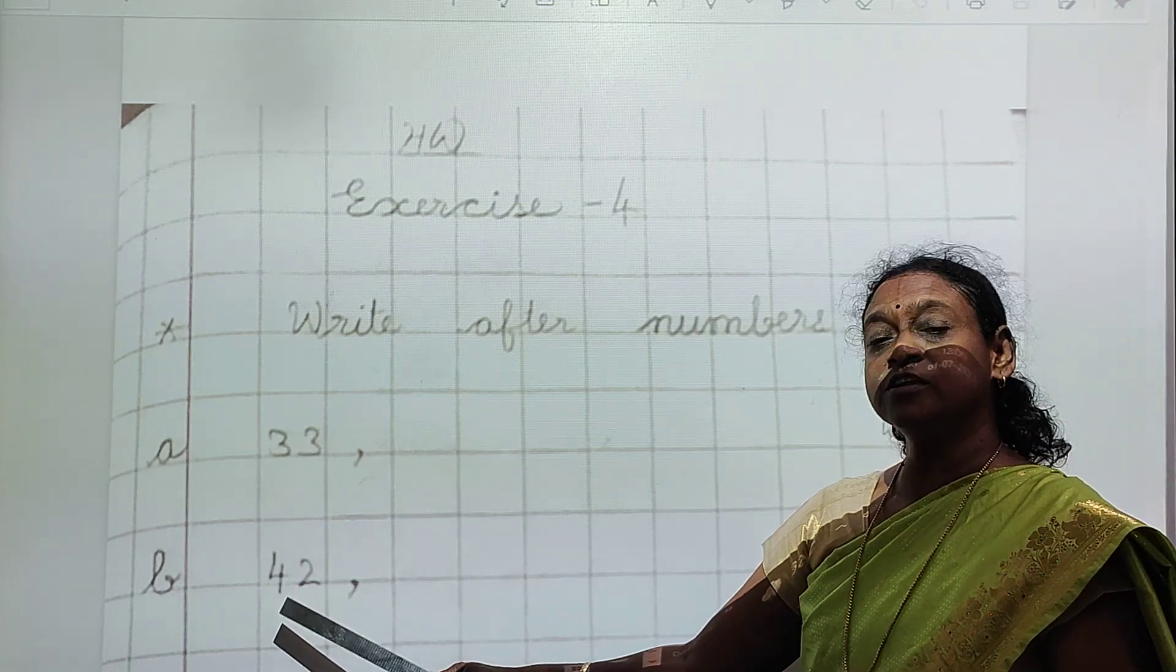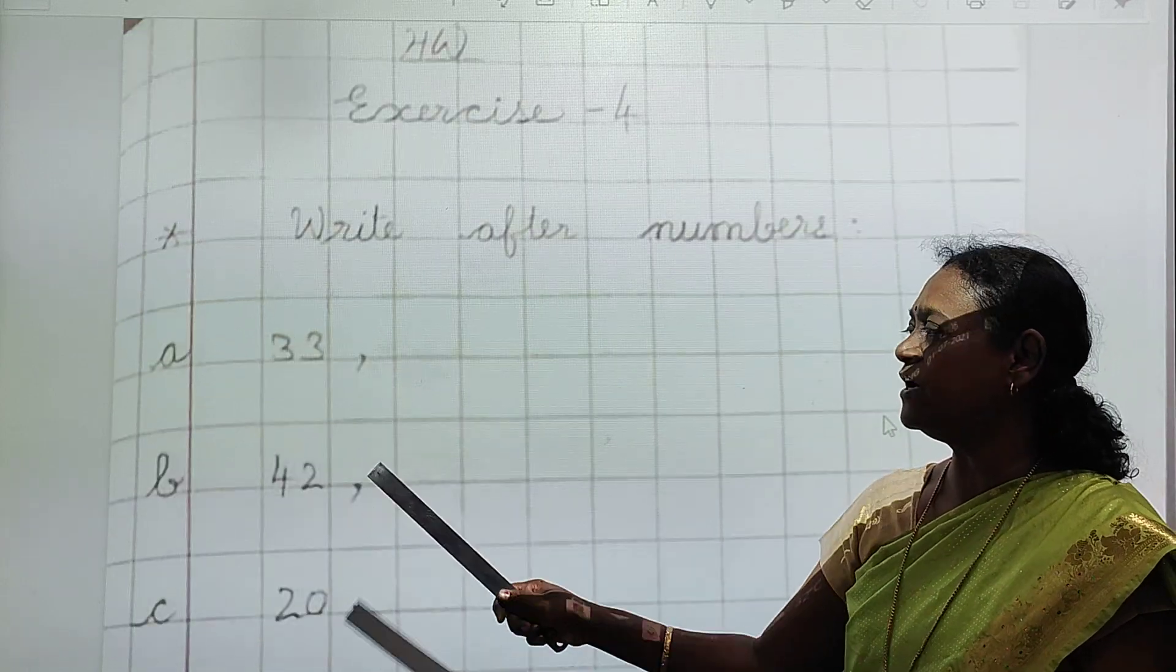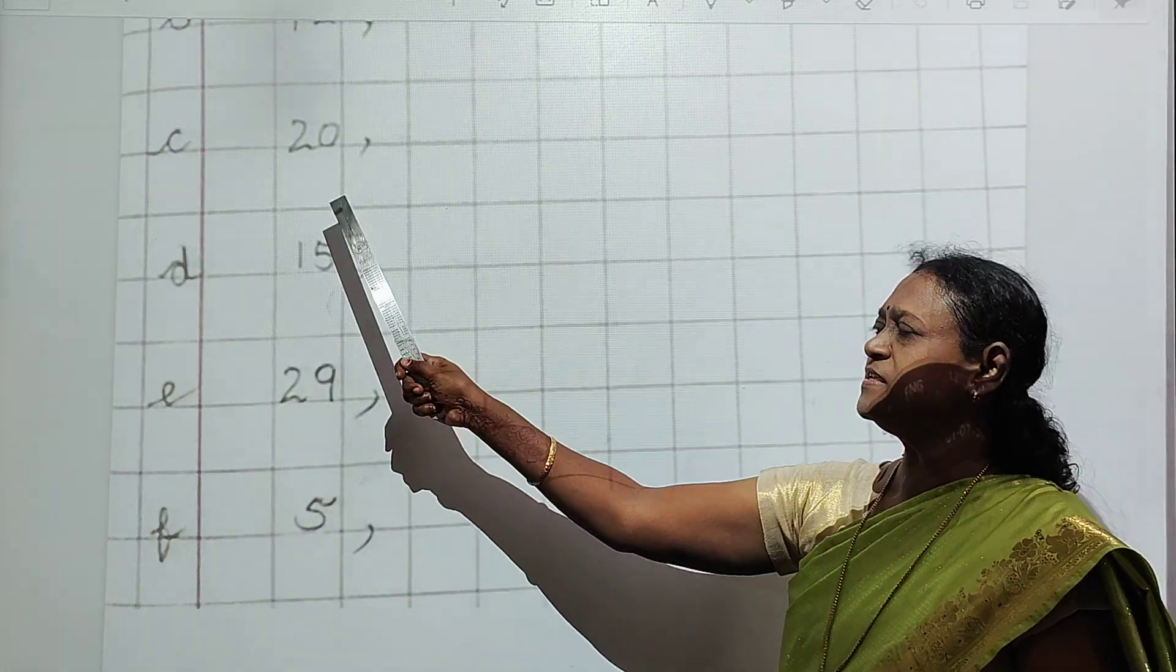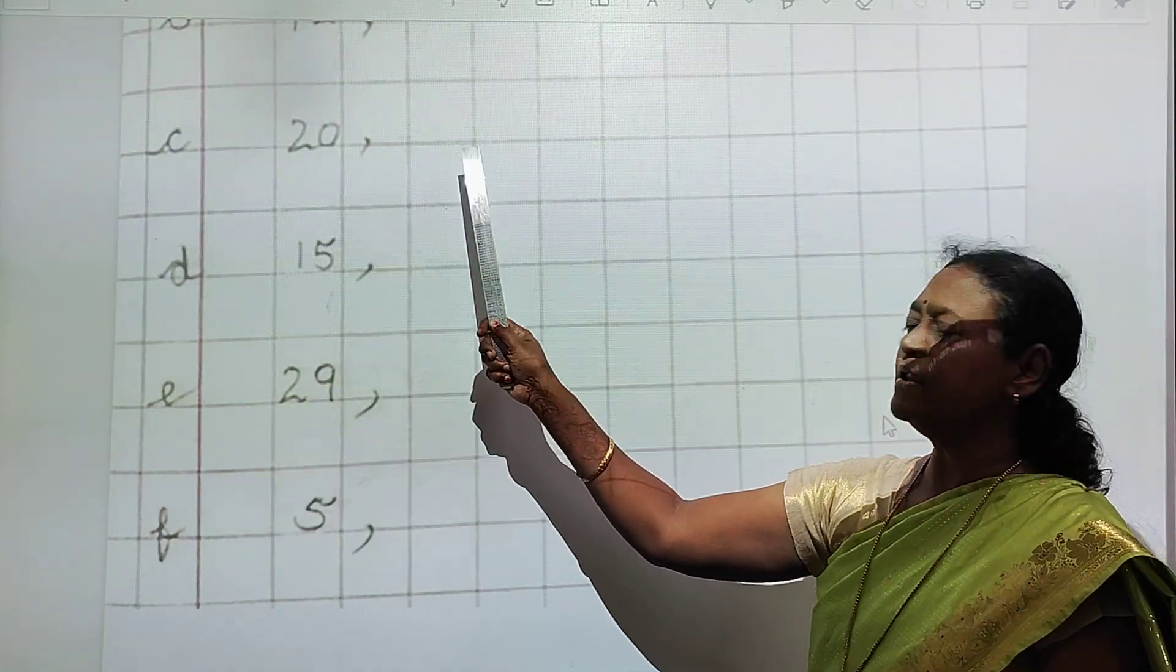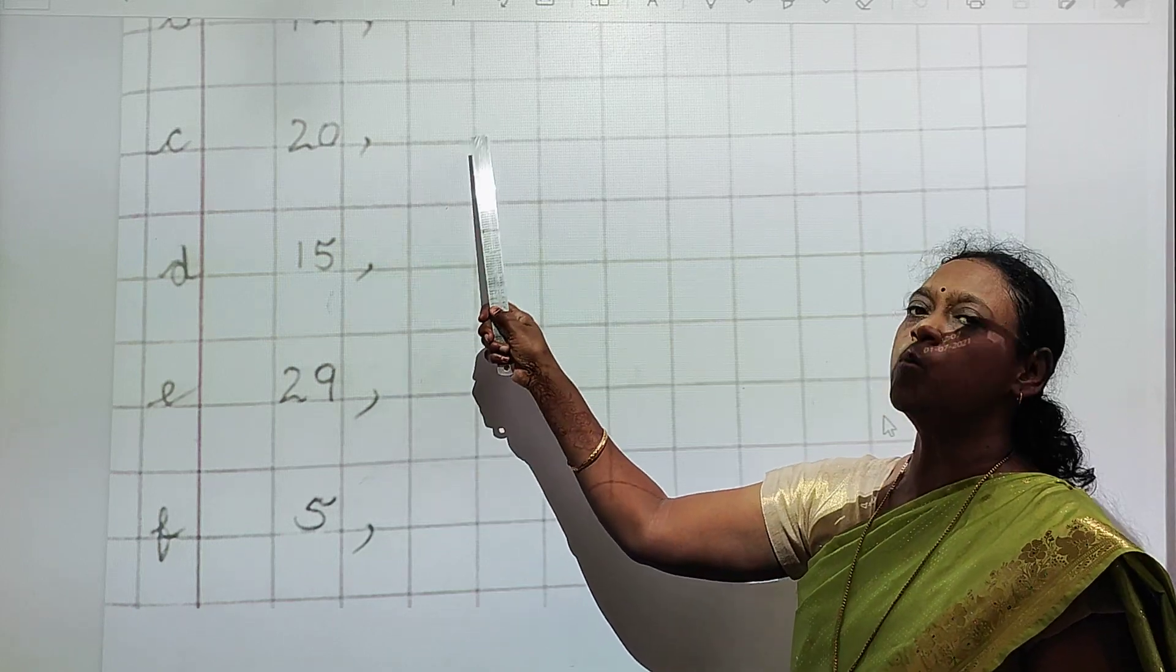Which number is this? 42. Put comma, then write answer 43. Next is 20. Put comma. And answer will be 20 ke baad kya aata hai? 21.